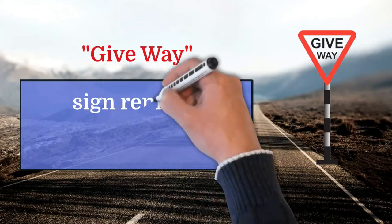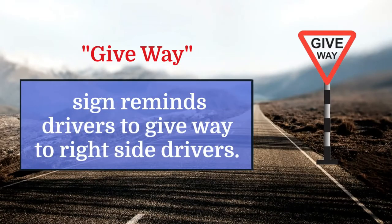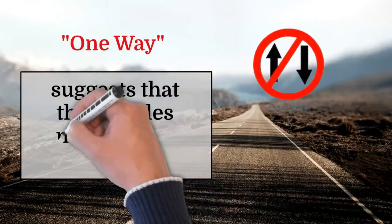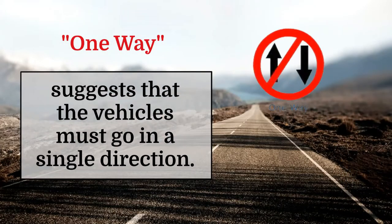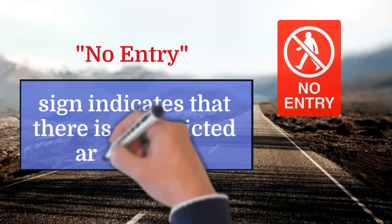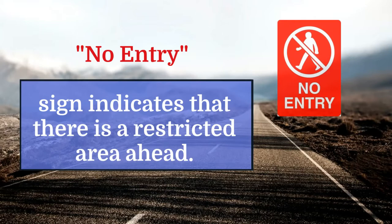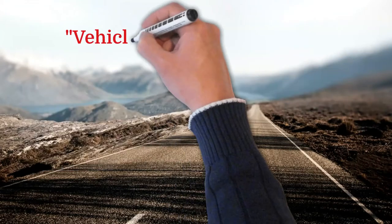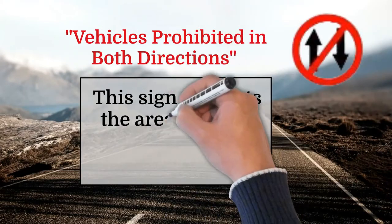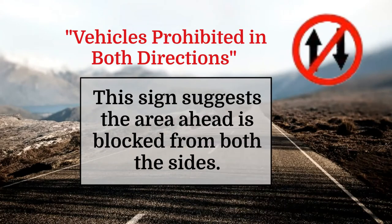Give way: this sign reminds drivers to give way to right-side drivers. One way: it suggests that the vehicles must go in a single direction. No entry: this sign indicates that there is a restricted area ahead. Vehicles prohibited in both directions: this sign suggests the area ahead is blocked from both sides.